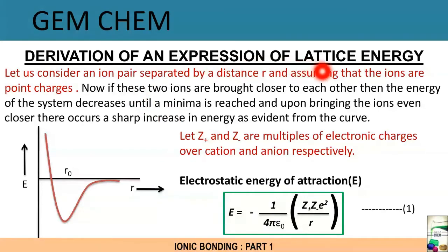Now we will deal with the derivation of an expression of lattice energy, and in this derivation we are going to derive the Born-Landé equation. Here we consider an ion pair separated by a distance r, assuming that the ions are point charges. When these two ions are brought closer to each other, the energy of the system decreases. This occurs because there is an attraction until a minima, which we can see in the graph. When we bring the ions even more closer, there occurs a sharp increase in energy as evident from the curve. This increase in energy occurs because then repulsion comes into play.